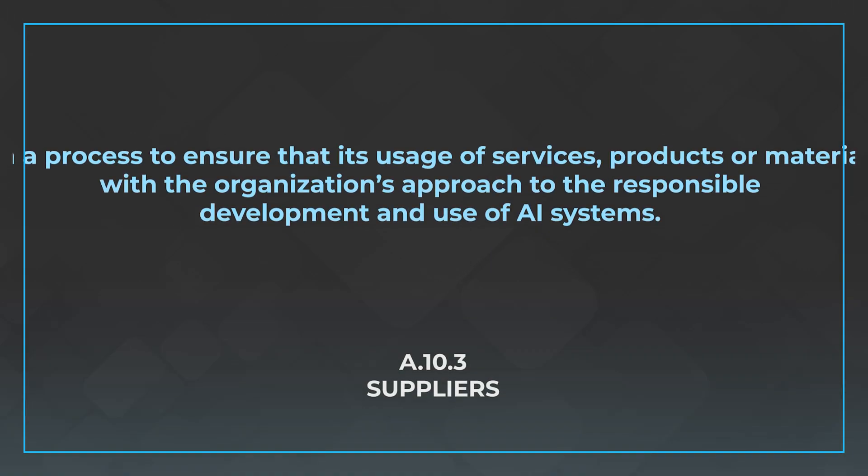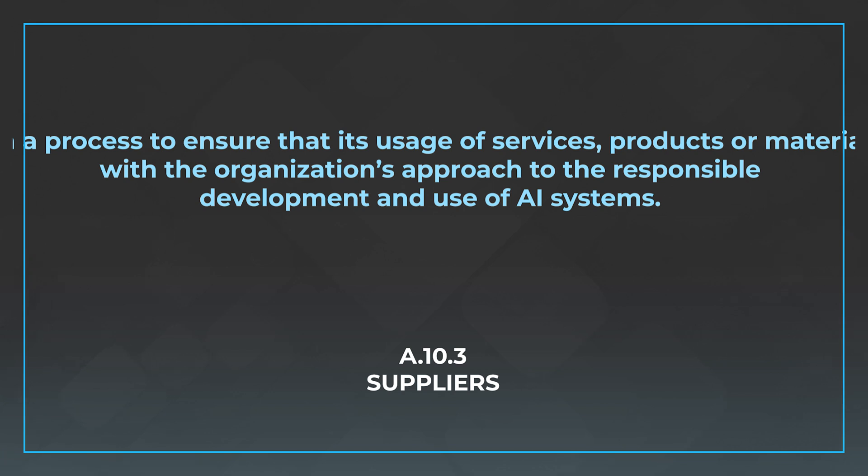The control says the organization shall establish a process to ensure that its usage of services, products, or materials provided by suppliers aligns with the organization's approach to the responsible development and use of AI systems. Think about what responsible use means to you — as covered in the Annex A.9 video — and weigh your suppliers against those standards, making sure you're not acting responsibly yourself while introducing a third-party supplier that isn't aligned with your definition of responsible use.